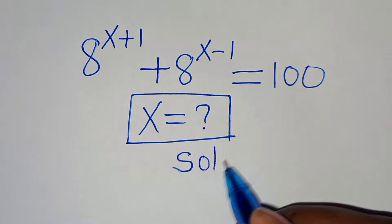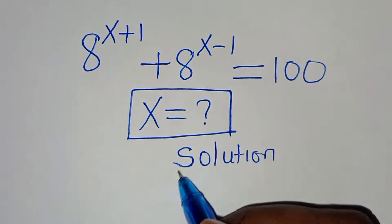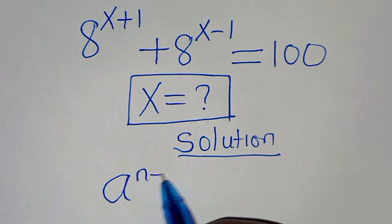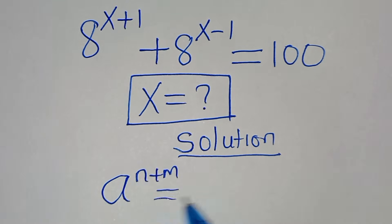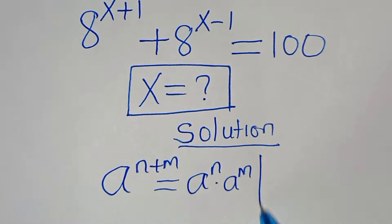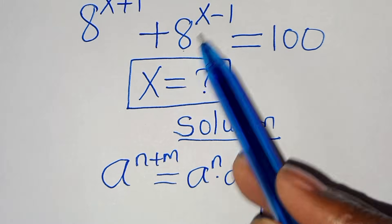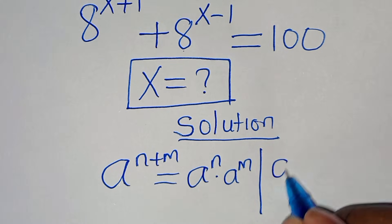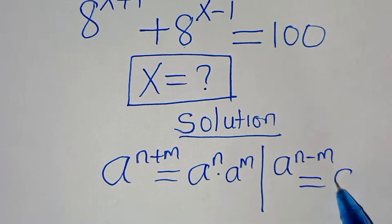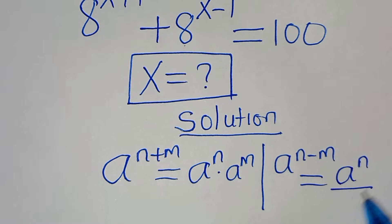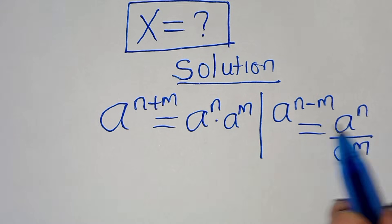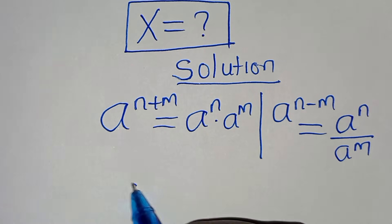Let's provide a solution. The term 8^(x+1) is in the form of 8 to the power of n plus m, which we can express as 8^n multiplied by 8^m. The term 8^(x-1) is in the form of 8 to the power of n minus m, which we can express as 8^n divided by 8^m. We'll apply these two exponent properties.